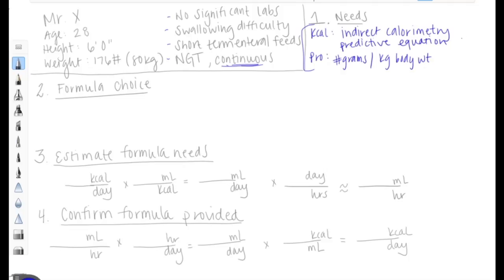Today's patient we're just going to use an estimation here of 1800 to 2000 kcals a day and we're going to use 80 to 90 grams of protein per day. That will help us when we move to our second step of formula choice.